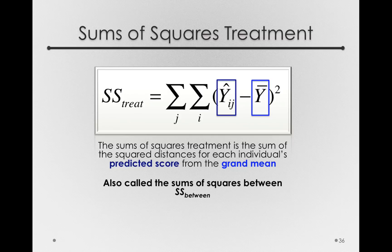Notice that these sums of squares for treatments are actually formed for every individual. Every individual in our data set will have a value for the treated deviation, in the same way that every individual had a value for error deviation. What we're doing is partitioning a person's score into one part treatment and one part error.